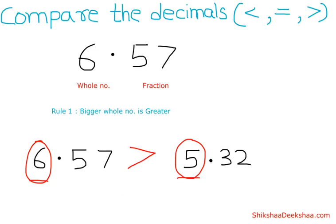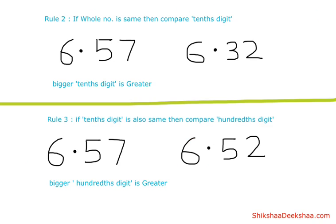Now, what if the whole number is the same in both numbers? If the whole number is the same, then compare the tenths digit. The bigger tenths digit is greater. Like here, 5 is greater than 3, so 6.57 is greater than 6.32.